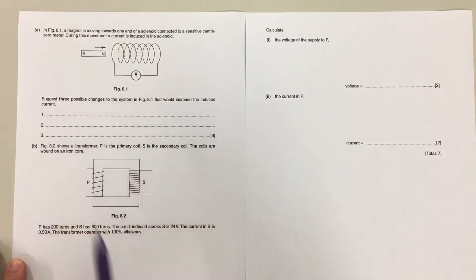The first question is suggest three possible changes to the system that would increase the induced current. Now there are four options that you've got here. You've got to choose three of them.